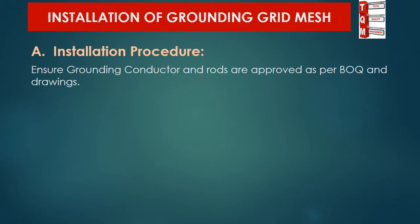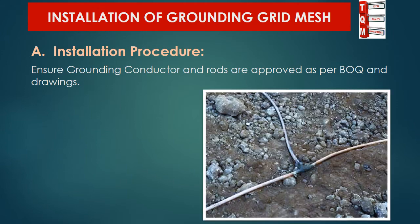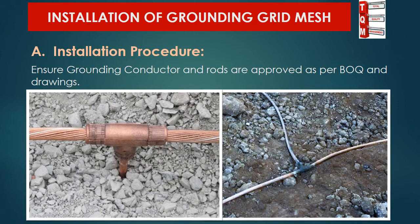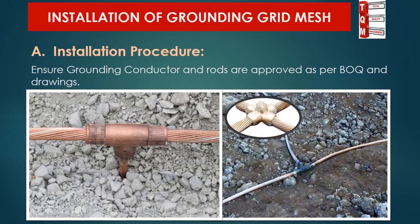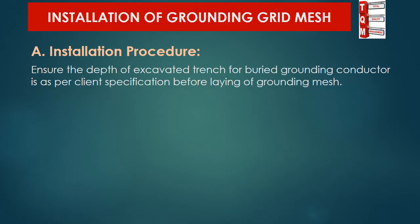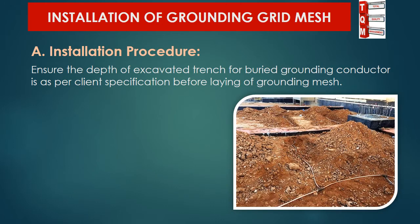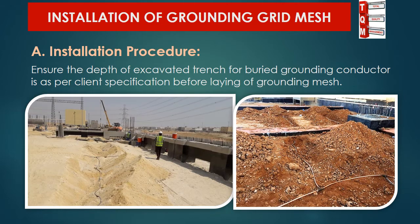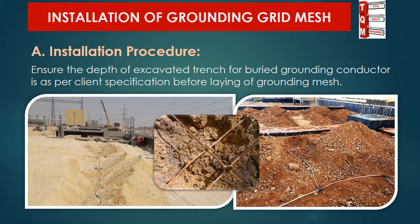The following steps are to be followed for the installation procedure. First, ensure grounding conductors and rods are approved as per BOQ and drawings prior to use at site. It is important to ensure the depth of the grounding conductor is as per client specification before laying — it usually varies from 0.5 meter to 1.5 meter depth from finish floor level. Confirm this depth from approved IFC drawings and lay the mesh at the required level.